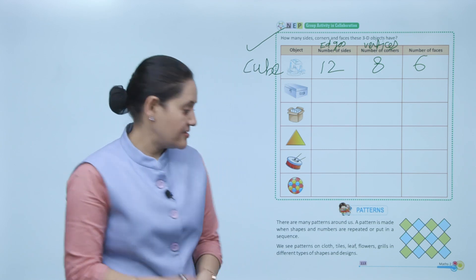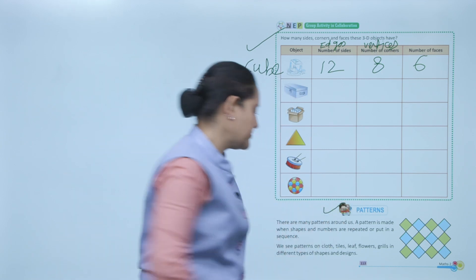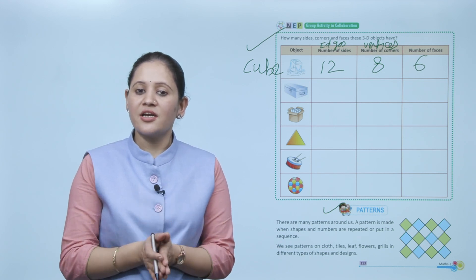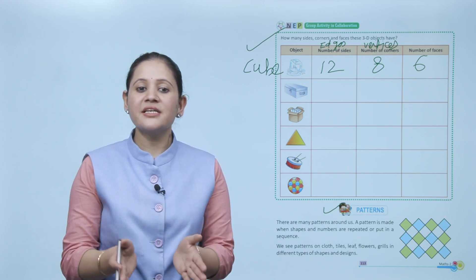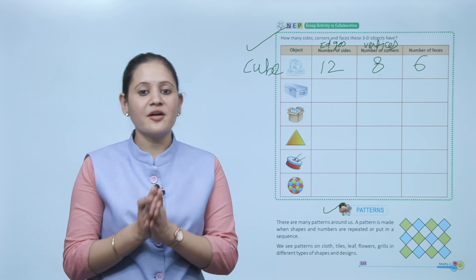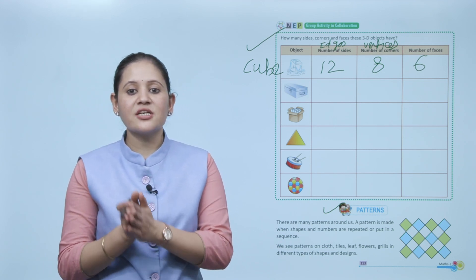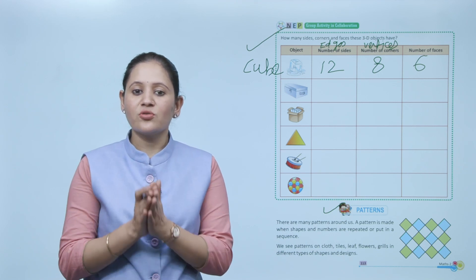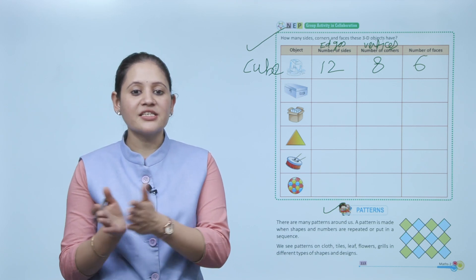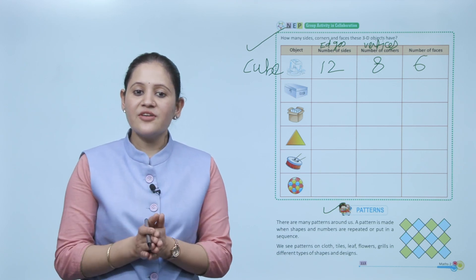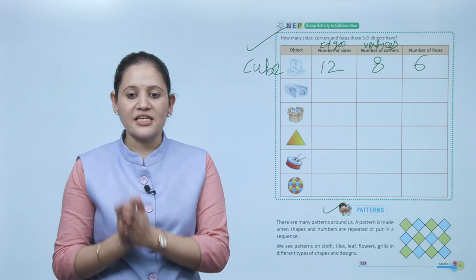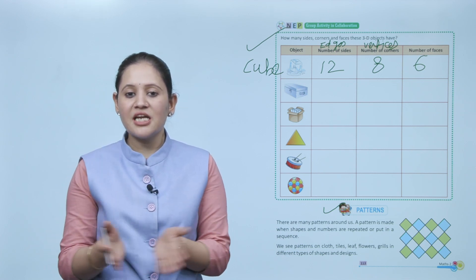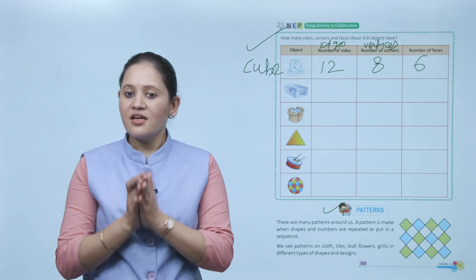Next is patterns. There are many patterns around us. A pattern is made when shapes and numbers are repeated or put in a sequence. We see patterns on cloth, tiles, leaves, flowers, and grids in different types of shapes and designs. We can make patterns with different shapes and numbers.